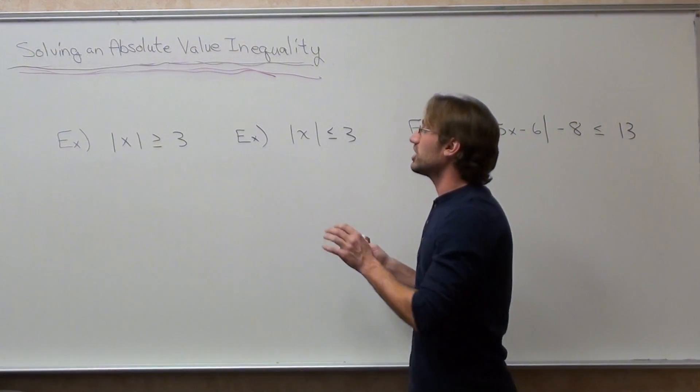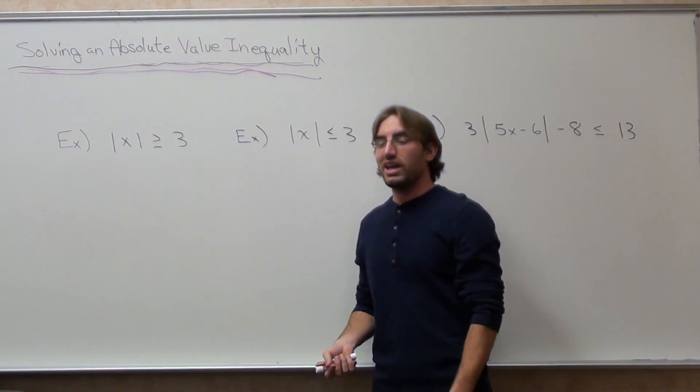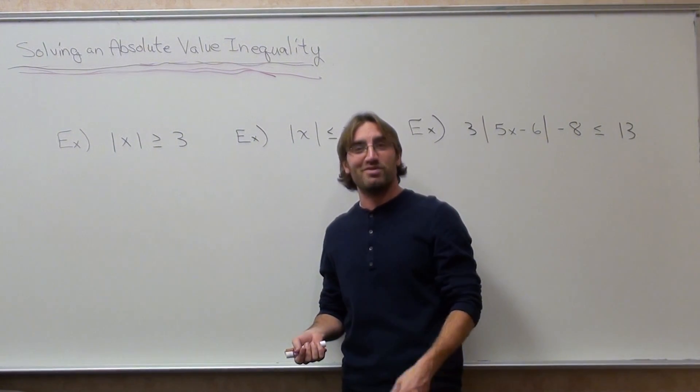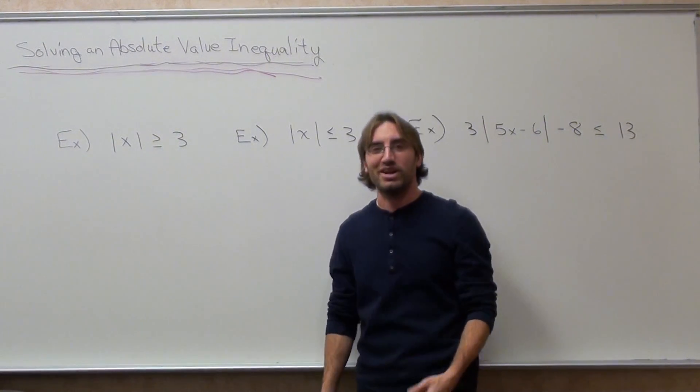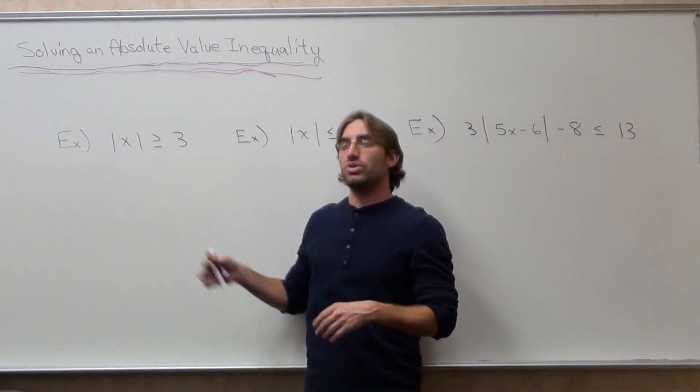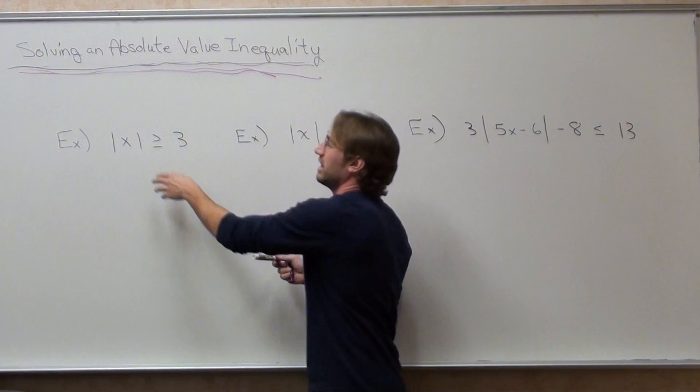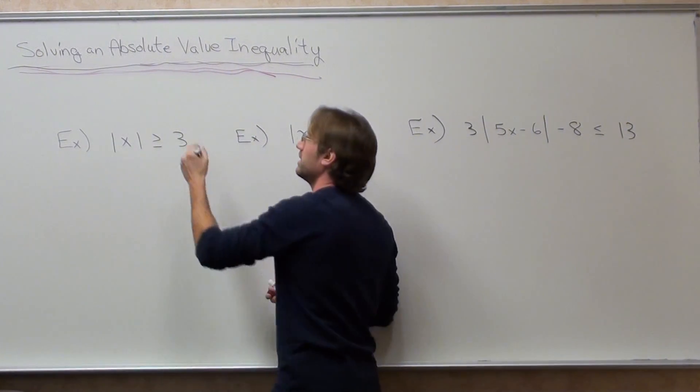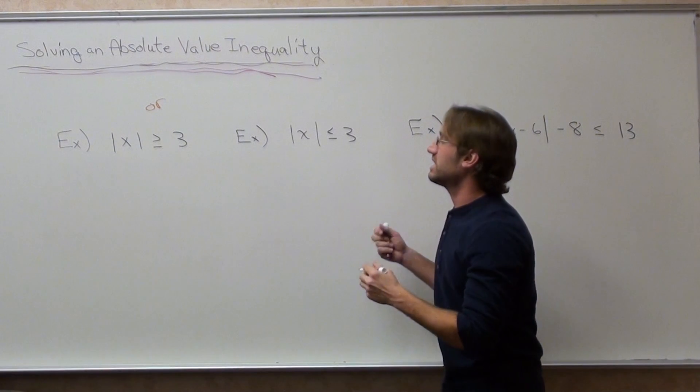Now, actually there's a very simple way to identify if something's an AND or an OR. This is a joke I usually use. And actually some people sometimes laugh, which I'm very surprised, because most of the time nobody really likes my math jokes anyways, but I keep trying. If it's greater than or equal to, it's an OR problem. That's after you divide and add and all you've got left is your absolute value and something on the other side. And if it's less than or equal to, it's an AND problem.